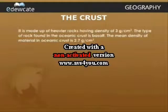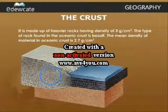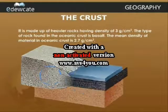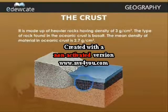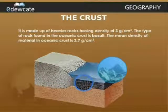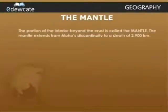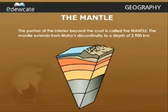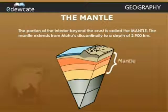The oceanic crust is made up of heavier rocks having a density of 3 g per cm³. The type of rock found in the oceanic crust is basalt. The mean density of the material in oceanic crust is 2.7 g per cm³. The portion of the interior beyond the crust is called the mantle. The mantle extends from Moho's discontinuity to a depth of 2,900 km.